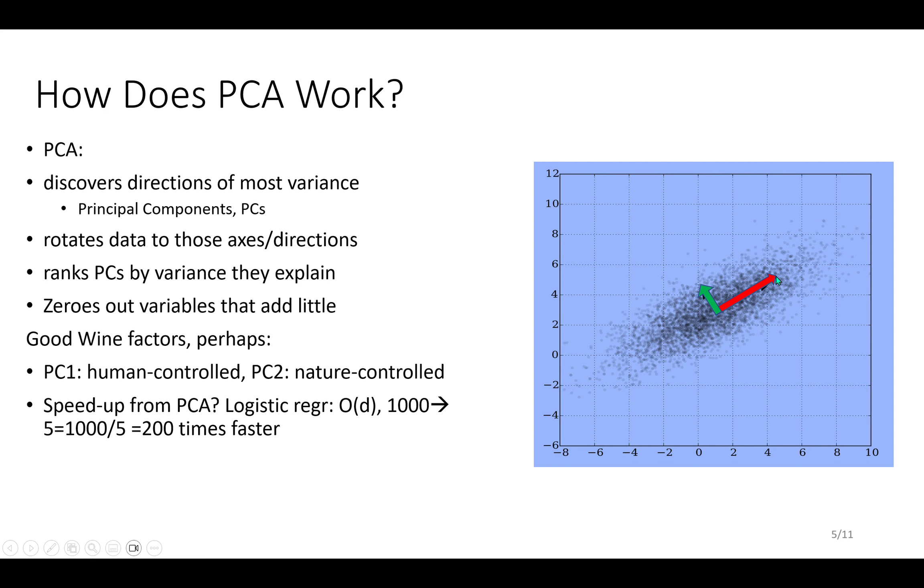As you vary this thing in the red direction, the red arrow, you can change quite a lot about the outcome. This is our first principal component, PC number one. That's the most variance. Then, independent of that, at 90 degrees, orthogonal, you have the second principal component in the green going in this direction.